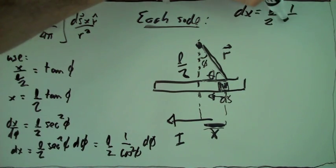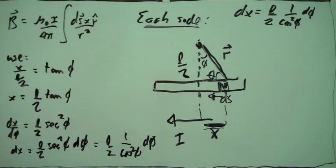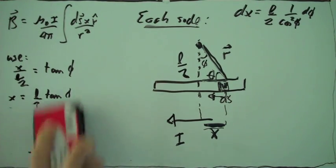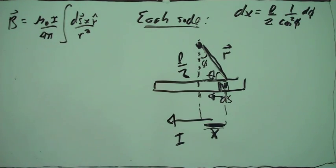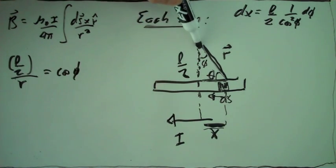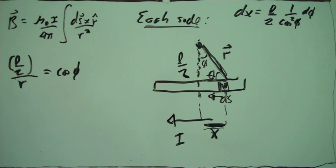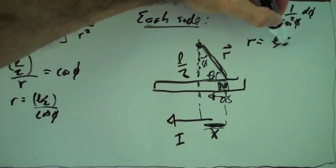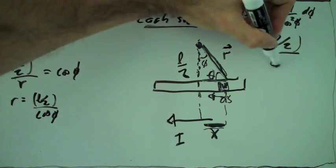Let's write that expression for dx up here so we don't forget. Another useful relation is that L over 2 divided by R is the cosine of phi, so R is just L over 2 divided by cosine of phi. That's another expression we'll write out because it's going to be very useful.